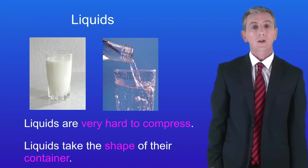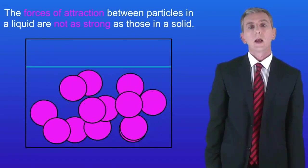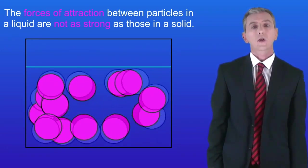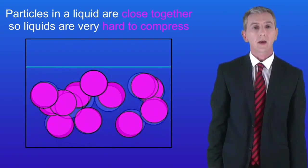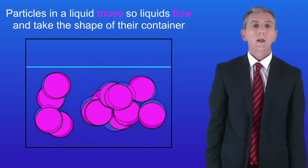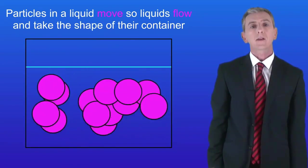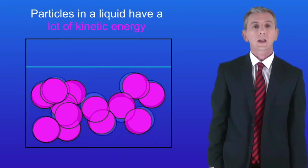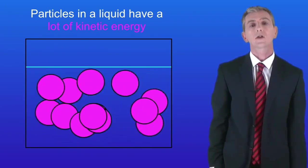So let's take a look at the particles in a liquid and see if we can explain these two properties. The first thing we can see is that the particles in a liquid are close together. There are forces of attraction between the particles in a liquid, but these forces are not as strong as the forces of attraction in a solid. Because the particles in a liquid are already close together, it's very hard to compress a liquid. The second key feature of liquids is that the particles are moving from place to place, and that means that liquids flow and take the shape of their container. So the particles in a liquid have quite a lot of kinetic energy.